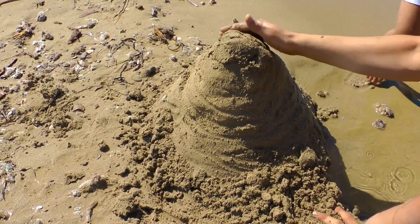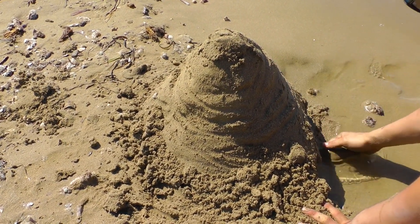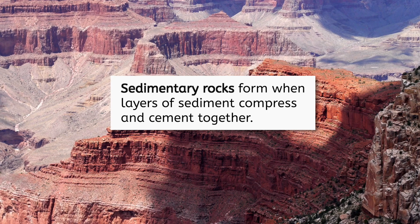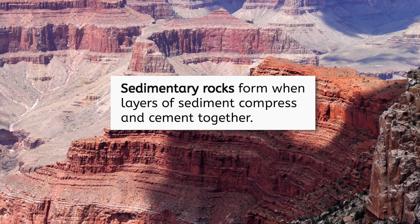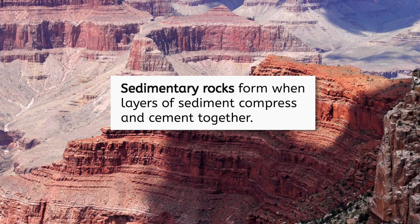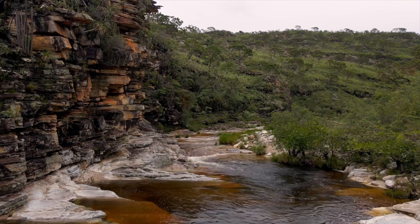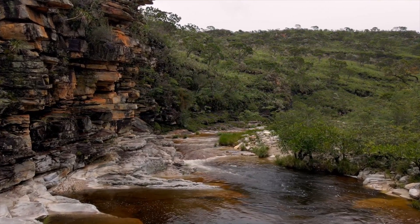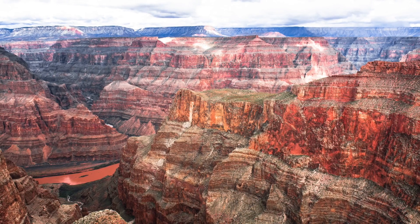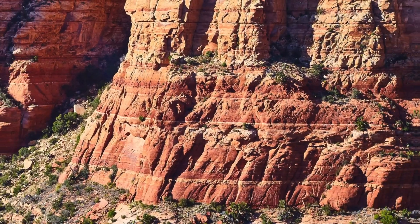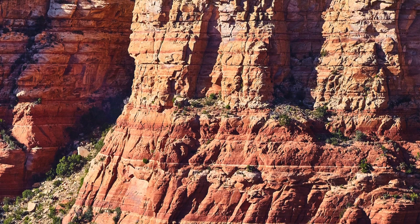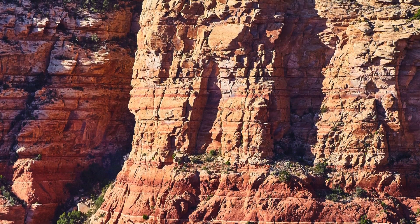If you've ever played with sand, you've probably noticed that when you press it together, it becomes firmer. Now imagine that sand under immense pressure, like the weight of this giant canyon. Over millions of years, sedimentary rocks form when layers of sediment compress and cement together. Sedimentary rocks are often found in places where sediment collects, such as lake beds, river beds, and ocean floors, allowing layers of sediment to accumulate over time. You can see the distinct layers in the rock, each telling a story about the environment at the time they were deposited.